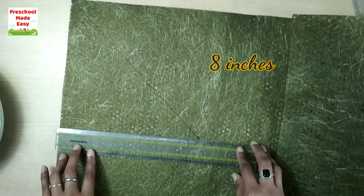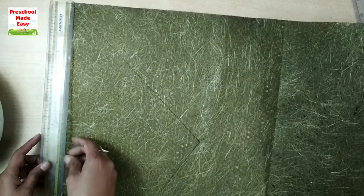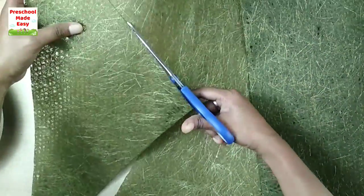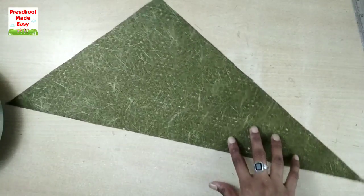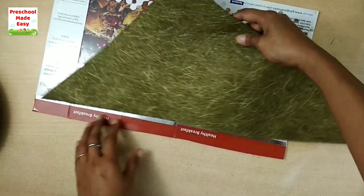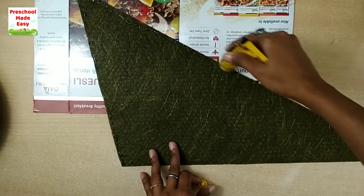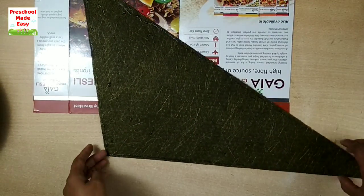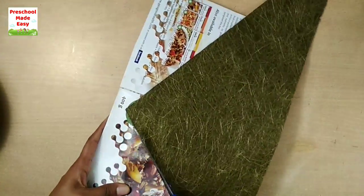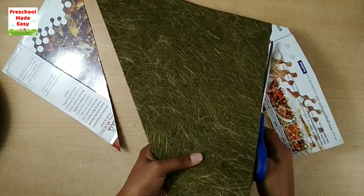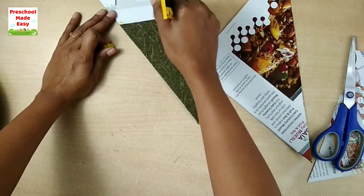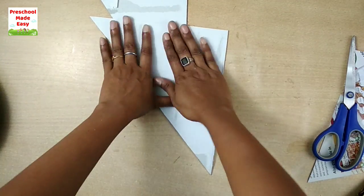To make it strong, I'm sticking cardboard to this paper, cutting this extra cardboard part. For this left out part, I'm sticking this cardboard piece again.